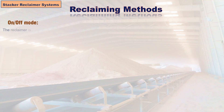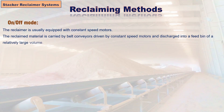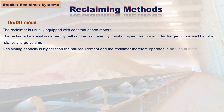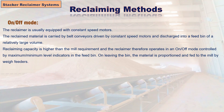There are two reclaiming methods. In the on/off mode, the reclaimer is usually equipped with constant speed motors. The reclaimed material is carried by belt conveyors driven by constant speed motors and discharged into a feed bin of relatively large volume. Reclaiming capacity is higher than the mill requirement, so the reclaimer operates in an on/off mode controlled by maximum and minimum level indicators in the feed bin. On leaving the bin, the material is proportioned and fed to the mill by way feeders.